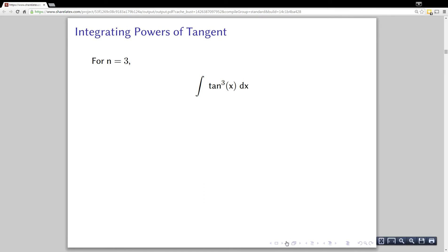For tan cubed, the strategy here is to pull off tan squared from tan cubed and use the Pythagorean identity on that: secant squared x minus 1. You can see that's pretty close to what we did for n equals 2.